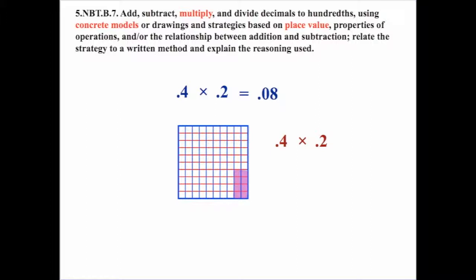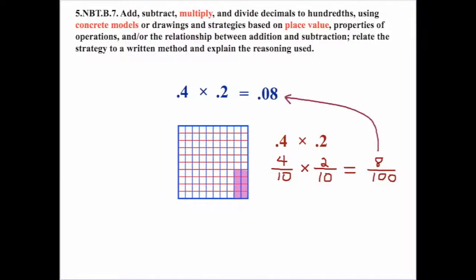We can't always use the physical model, so let's look at this from other perspectives. Converting to fractions: four tenths times two tenths equals eight over one hundred — eight hundredths. This verifies that our decimal placement is correct. The connection between fractions and decimals is clear: four tenths times two tenths equals eight one-hundredths, showing how fraction multiplication confirms decimal point placement.